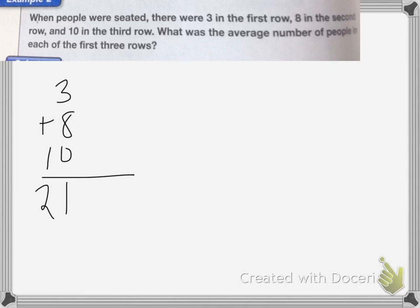Then, to find the average, I take 21 and divide it by how many numbers I have. In this case, I have one, two, three numbers. So I'm going to divide 21 divided by three, which is seven. The average of people in each row is seven people.